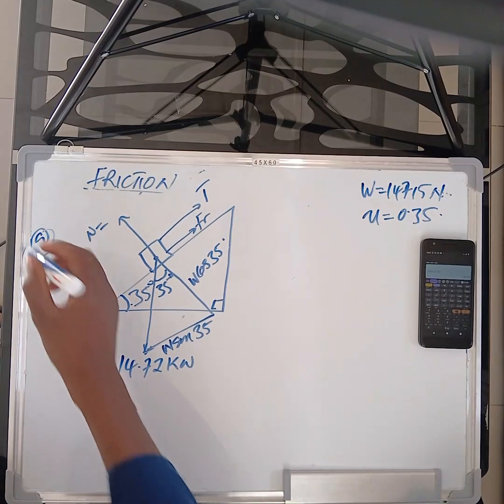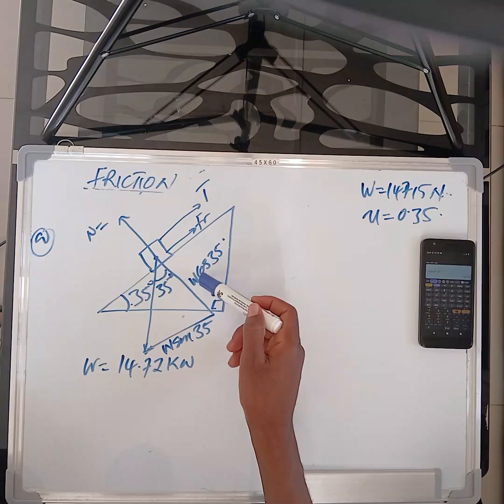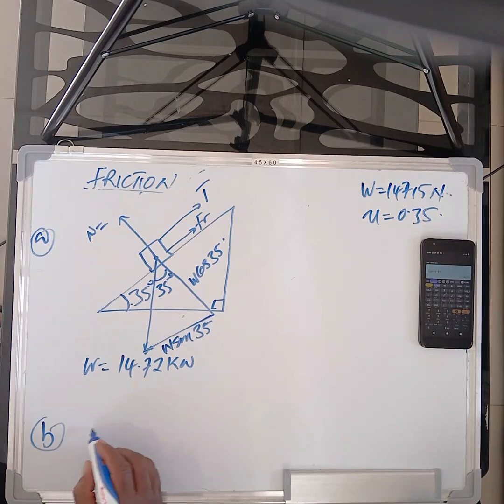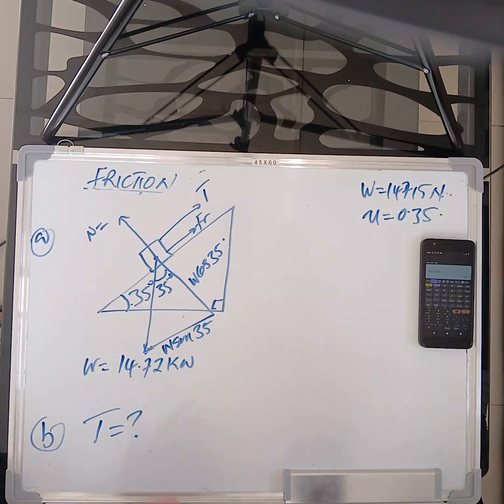So this side is opposite the angle. So it is sine. So it's W sine 35. This one is adjacent. It's W cos 35. I'm done with my free body diagram. That's how we answer A. So we can tell actually that normal here, this normal is the same as W cos 35.